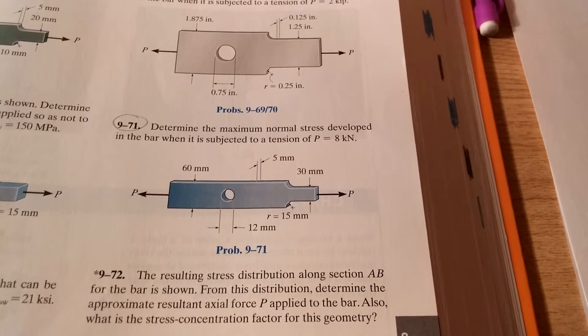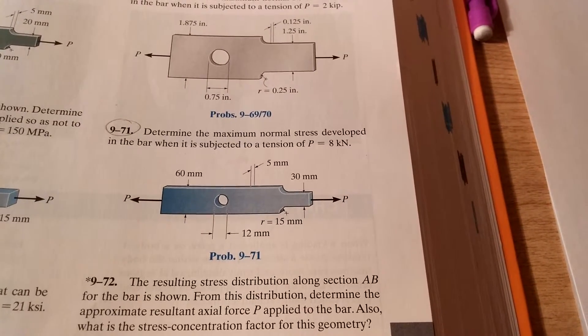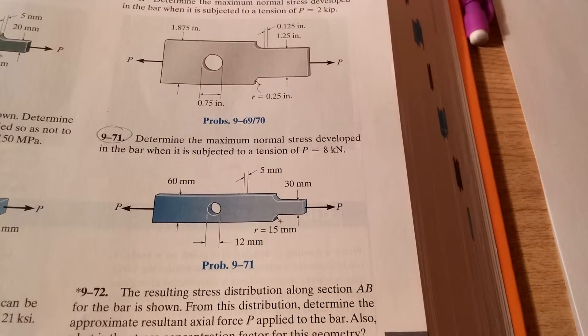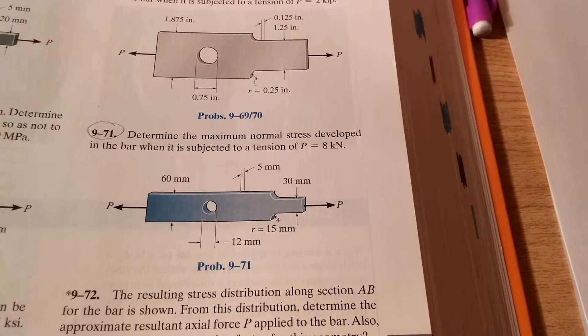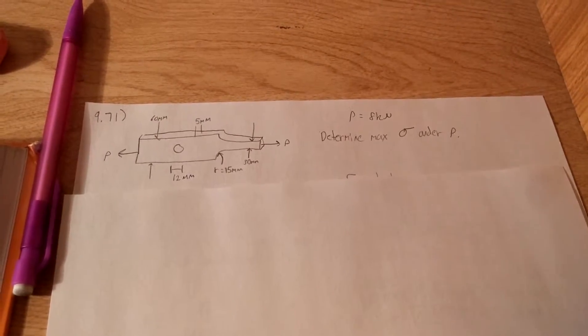So we have to worry about that hole, because the hole might fail right there. And then we have to worry about that skinnier end, because that might also fail. Coming over here, we've got our diagram and our givens.